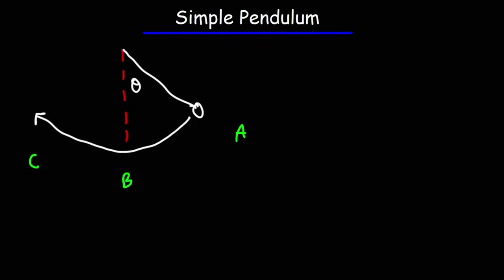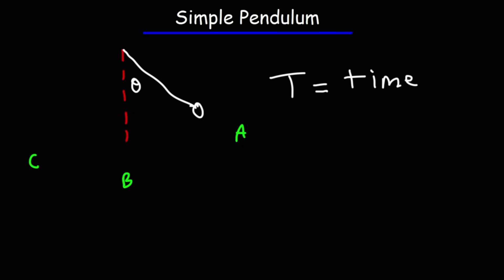Knowing what a complete swing is helps you determine the period and the frequency of a simple pendulum. The period, represented by capital T, is the time it takes to make one complete swing — going from A to C and then C back to A. You can also calculate the period by taking the time and dividing by the number of cycles. The period is measured in units of seconds.